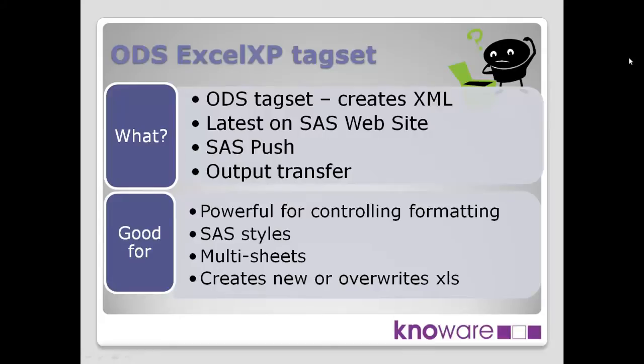What type of technique is this? It's a push technique from SAS — SAS is in control, pushing out the information into the file, which Excel then opens and accesses later on. What type of transfer is it? It's output being transferred. It's not taking a SAS table across into Excel, but taking the result of various procedures — it could be a proc tabulate, proc print, or data step output — and that resulting output is moved across into Excel.